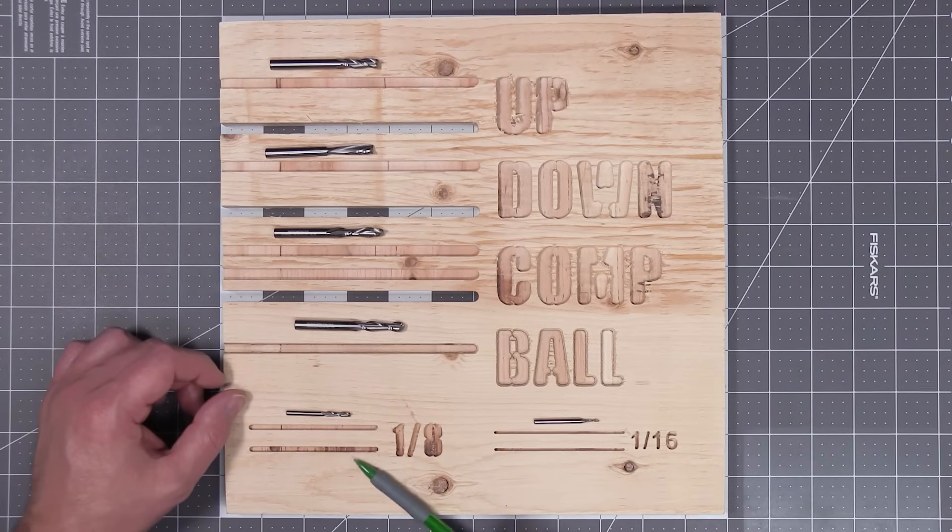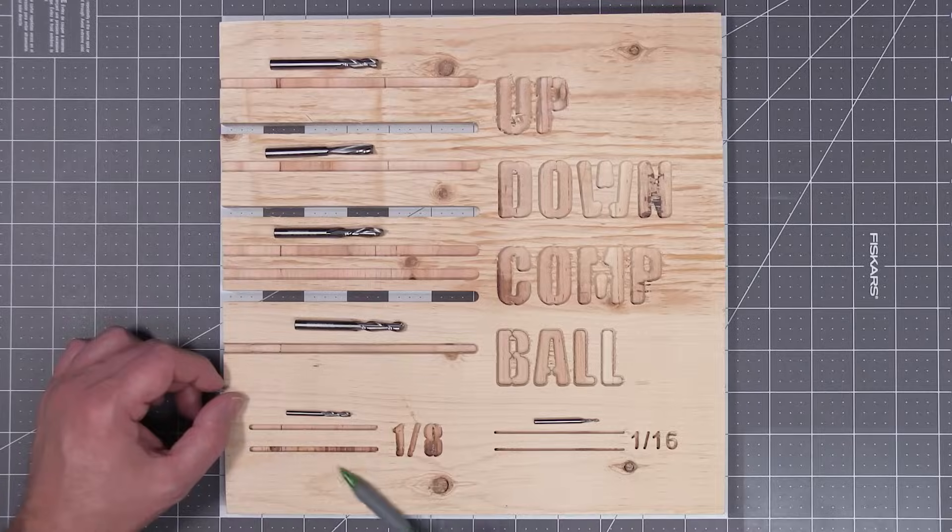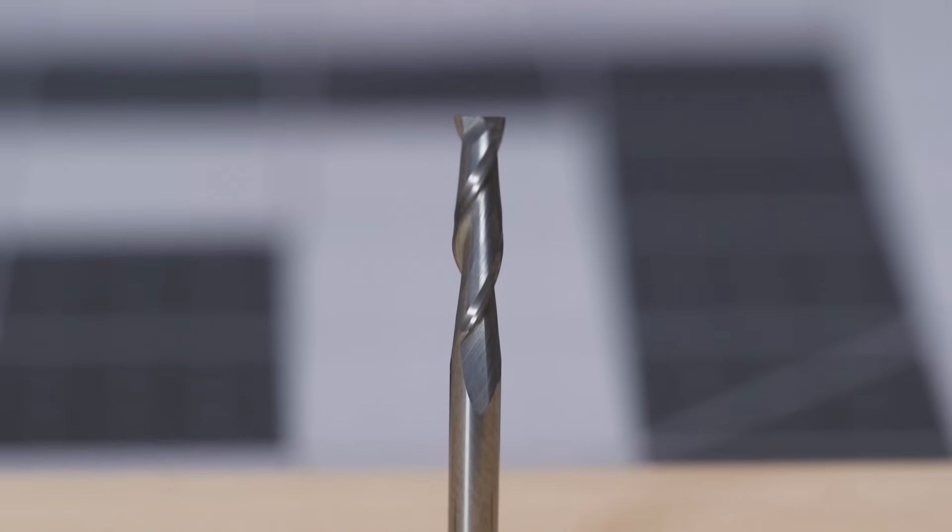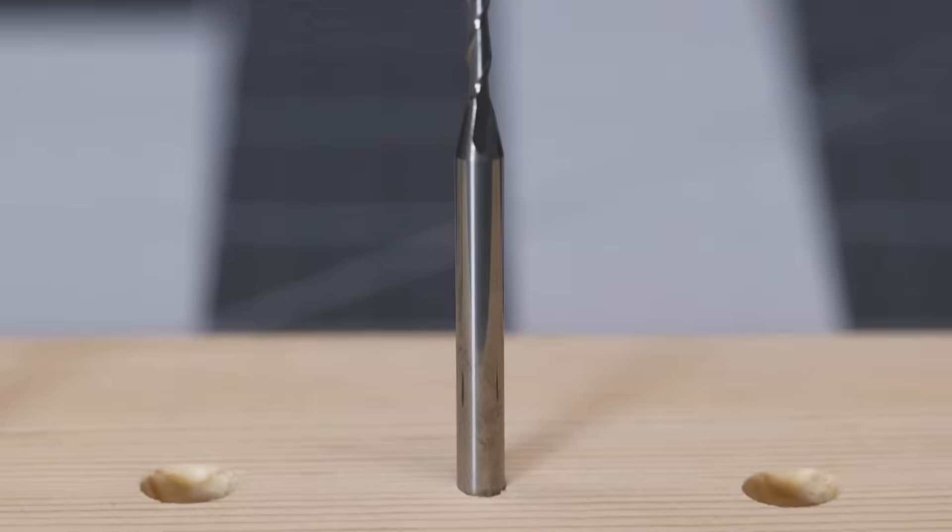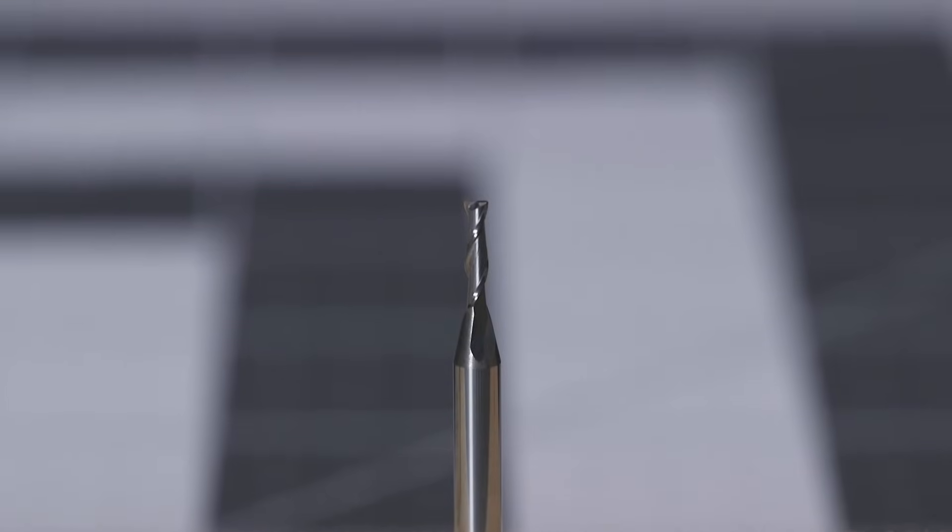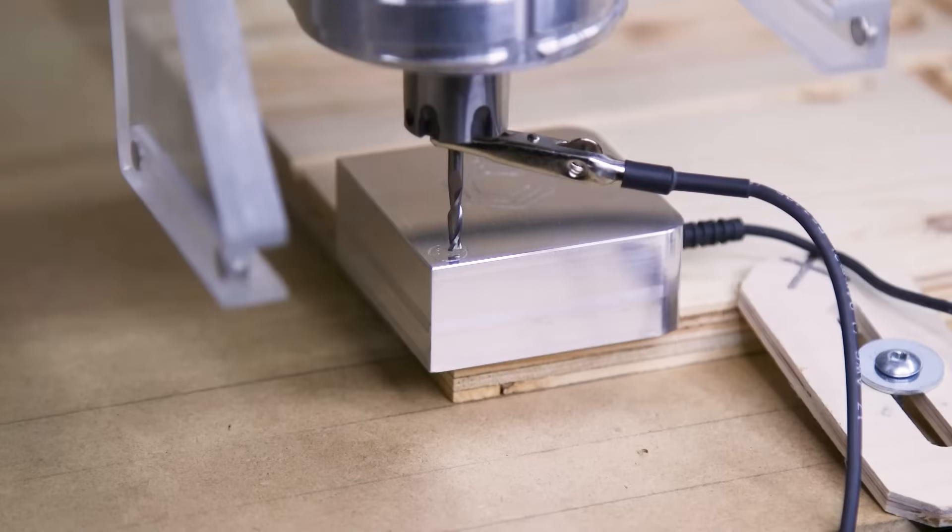So you're aware, these bits all do come in different diameters, with the smaller diameters letting you have more detail and thinner cuts. Here we'll be testing a 1/8th and 1/16th upcut end mill so you can get a size comparison relative to the 1 quarter end mills we've already used.